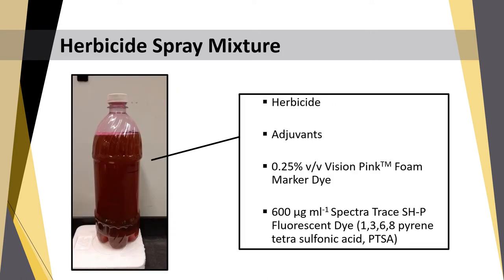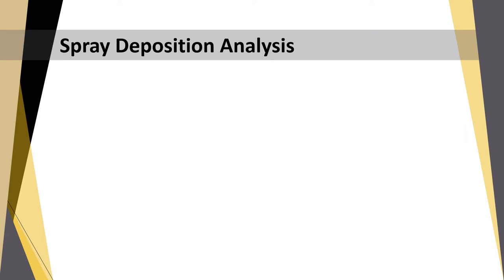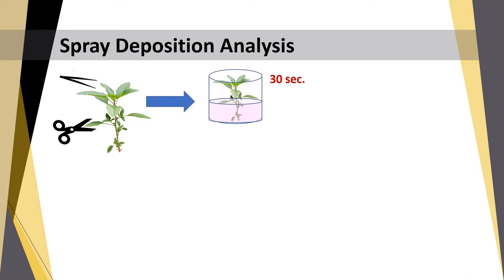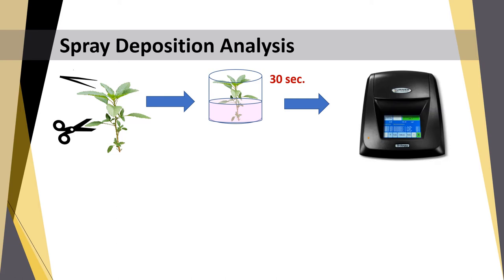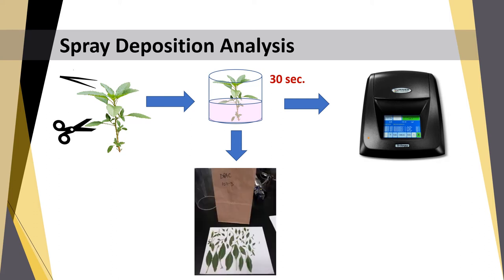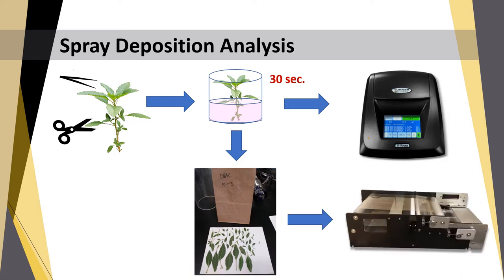The spray bottles contained the herbicide, the corresponding adjuvant in the case of glufosinate, Vision pink foam marker dye for the Chromacard cards, and Spectra/Trace fluorescent dye for the spray deposition analysis. For total spray solution deposition on target weed plants using PTSA dye, the three marked plants in each plot were carefully harvested and placed in containers with rinse solution for 30 seconds. Containers were brought to the lab and analyzed with a fluorometer for raw fluorescence. Once the wash-off process was completed, plants were kept in paper bags, brought back to the lab, and all leaves were cut and run through the leaf area meter. Through a series of calculations, we obtained results for spray solution deposition in microliters per centimeter squared of leaf.